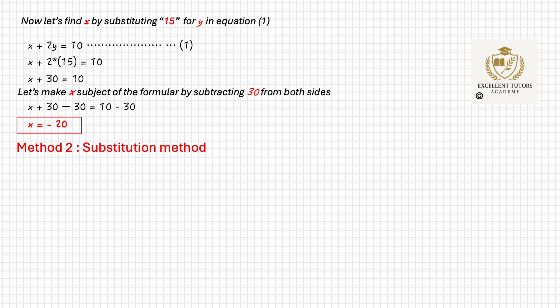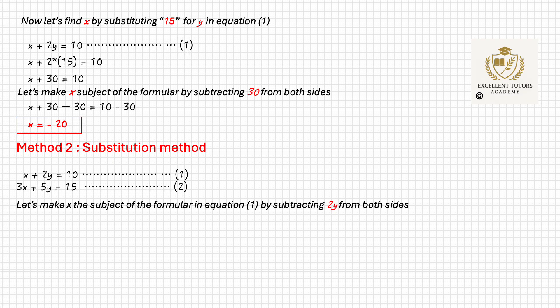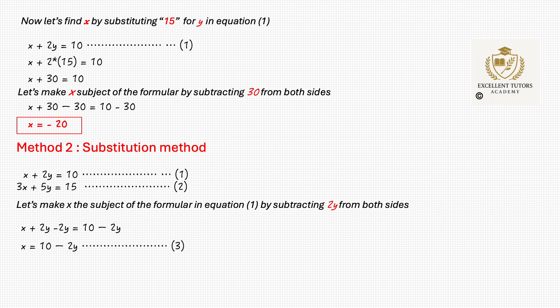Now let's try the second method, which is the substitution method. We have equation 1 and equation 2 again. Let's make x the subject of the formula in equation 1 by subtracting 2y from both sides: x plus 2y minus 2y equals to 10 minus 2y, so x becomes 10 minus 2y. We call that equation 3.